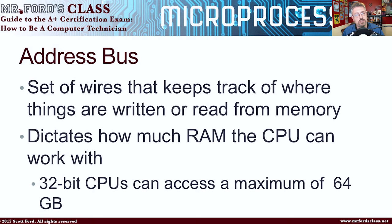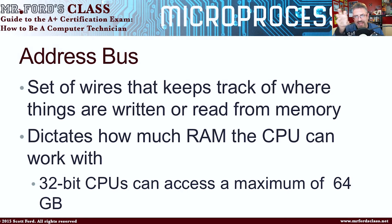So a 32-bit CPU can access a maximum of 64 gigabytes of RAM. Now, we never actually saw that number, mainly because of operating system limitations. But the address bus deals with how it accesses the RAM, how it gets information out of there, and where it stores it.